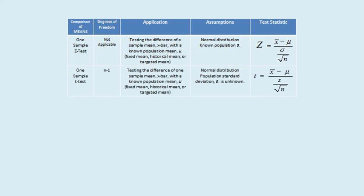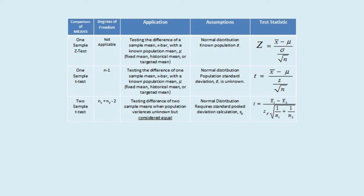For the one-sample z-test, the formula is z = (x̄ − μ) / (σ / √n), used when testing the difference of a sample mean with a known population mean. Assumption: normal distribution with known population standard deviation. For the one-sample t-test, degrees of freedom = n − 1, formula: t = (x̄ − μ) / (s / √n), used when population standard deviation is unknown.